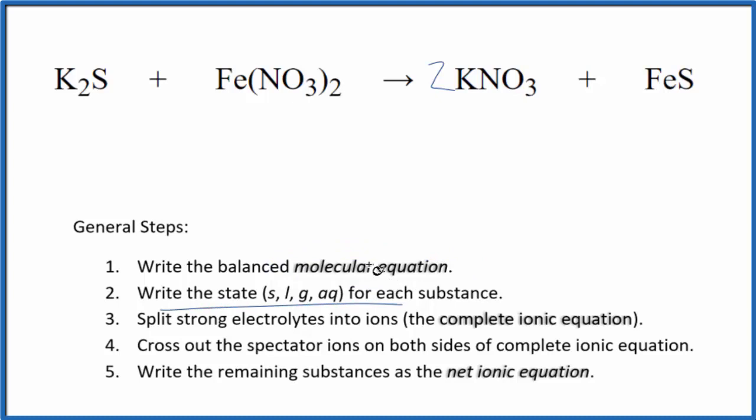Now we write the state for each substance. Potassium compounds are soluble, we write aq. It'll dissolve. Nitrate's very soluble. We have another nitrate here. And then FeS, if you look this up, this is insoluble. It won't dissolve in water. So these two react. This will be a solid and it'll be a precipitate. It'll fall to the bottom of the test tube. So these are the states for our net ionic equation.